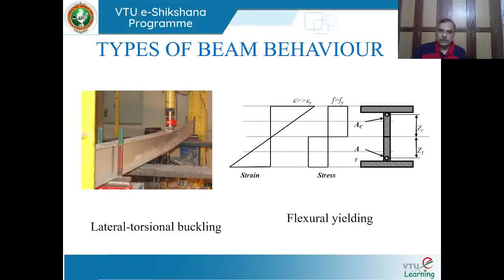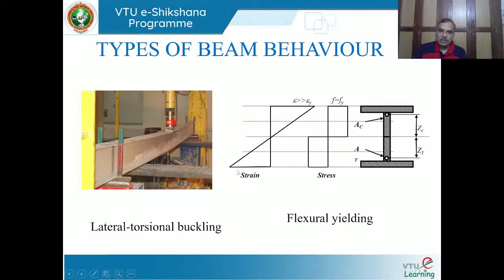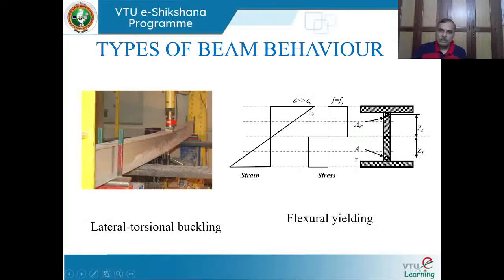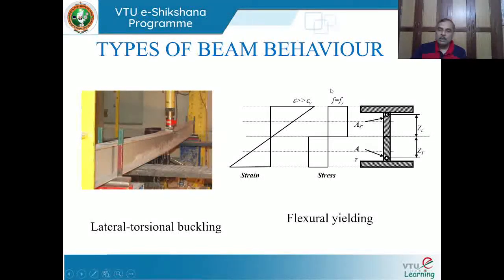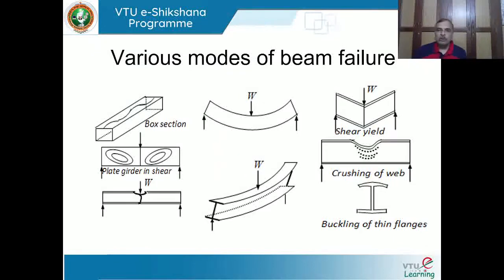When the beam gets completely plastified - undergoing yielding because of bending - it is referred to as flexural yielding. The stress distribution over the entire depth equals the yield stress, and the extreme fiber has undergone substantial deformation with substantial straining. This is the behavior of a laterally supported beam where the cross-section completely yields and the beam is not susceptible to lateral buckling.